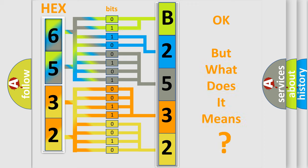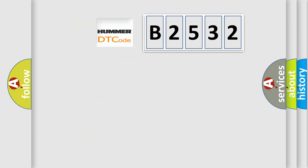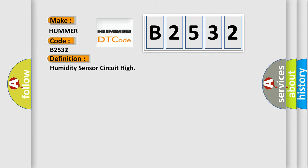The number itself does not make sense to us if we cannot assign information about what it actually expresses. So, what does the Diagnostic Trouble Code B2532 interpret specifically for PUMA car manufacturers? The basic definition is: Humidity Sensor Circuit High.